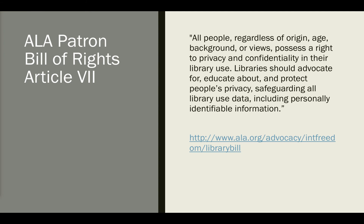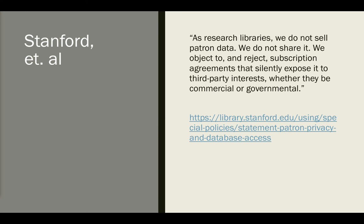I am heartened to see some recent institutional attention given to this new privacy landscape. ALA Patron Bill of Rights Article 7 was approved at midwinter. This reads as pretty aspirational to me given what I've looked at — I think it's fairly safe to say that we are not presently protecting privacy and safeguarding library use data. Likewise, the Stanford statement referenced earlier is an excellent and powerful statement, but unless the code being shipped to users from those libraries is substantially different from what's being shipped to University of Minnesota patrons, they are in fact silently exposing user data to third-party interests.